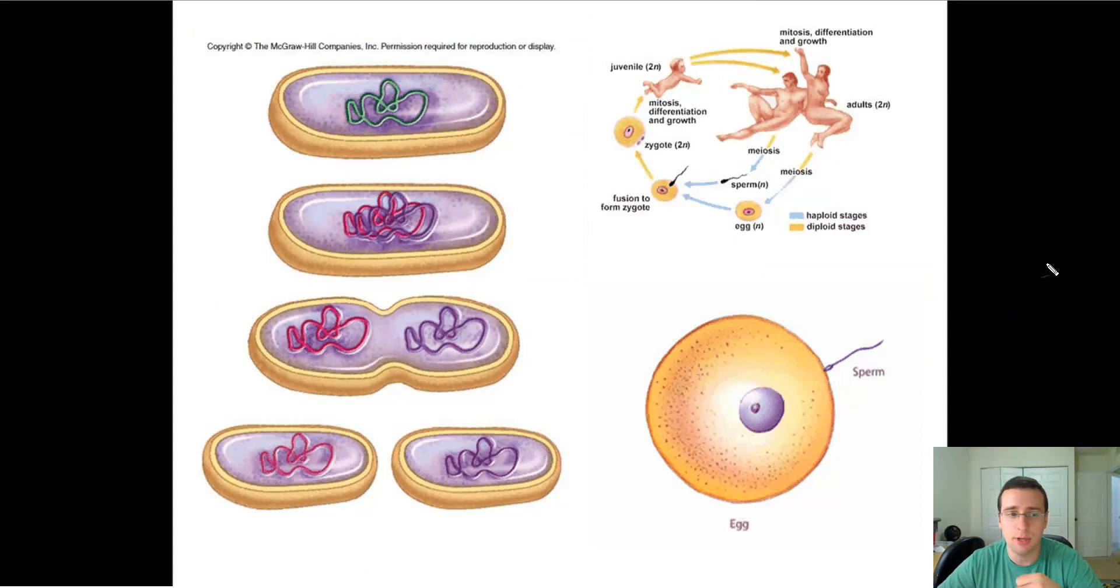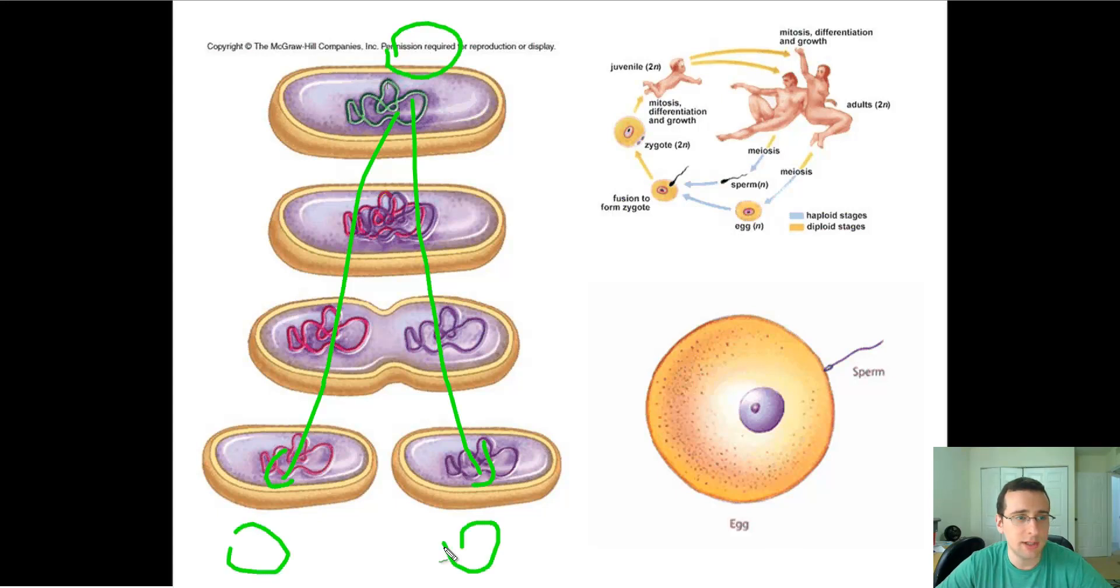Now there are two types of reproduction. The first is asexual and the second is sexual. Asexual reproduction is reproduction where there's only one parent. Usually what happens is that one parent will split into two. So the characteristic of asexual reproduction is that one becomes two, as you see in that picture on the left side.